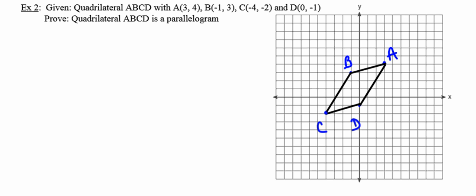I can use slopes to prove that both pairs of opposite sides are parallel, which would make my quadrilateral a parallelogram. I could use the distance formula to show that both pairs of opposite sides are congruent. I could use both slope and distance on just one pair of opposite sides to show they're both parallel and congruent. Or I could use the distance formula four times to show that the diagonals bisect each other. The only method I can't use here is showing that both pairs of opposite angles are congruent.